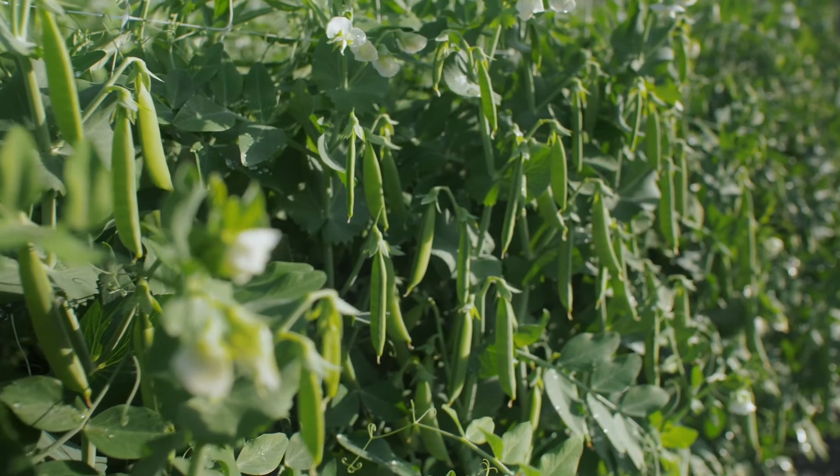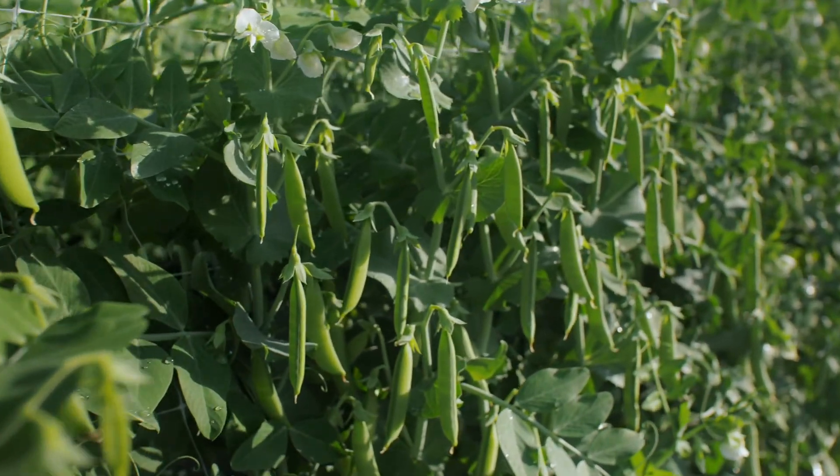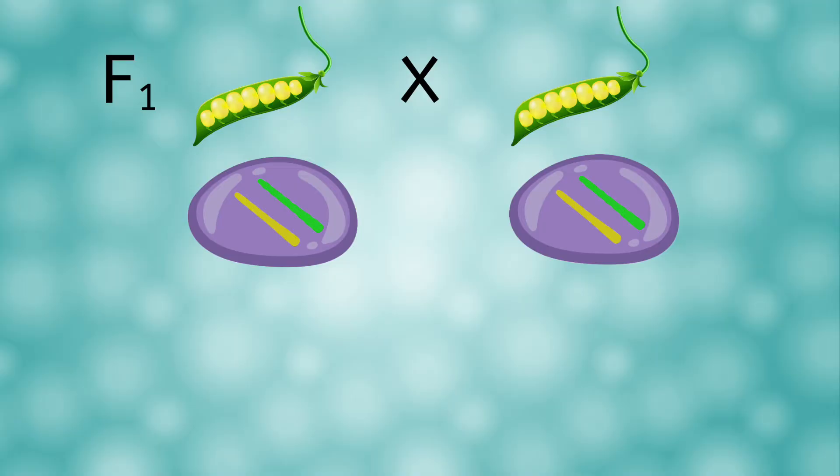Mendel wasn't done experimenting yet though. He decided to let the plants from his F1 generation self-pollinate. Remember that these plants all had yellow seeds, but they also carried an allele for green seeds. The offspring from these plants is called the second filial, or F2 generation. An even bigger surprise happened here.